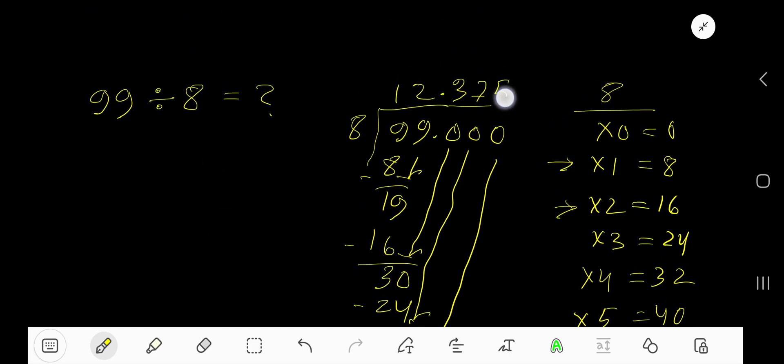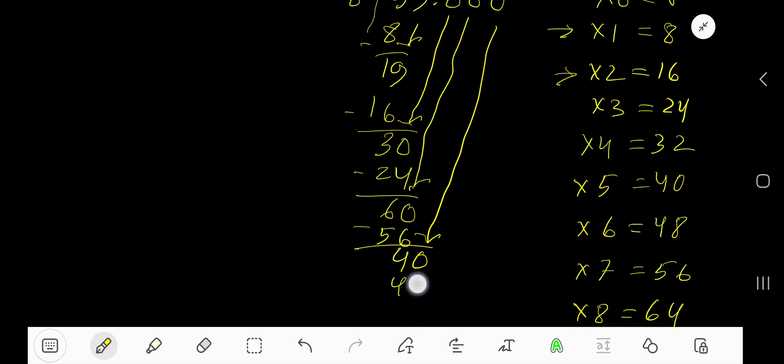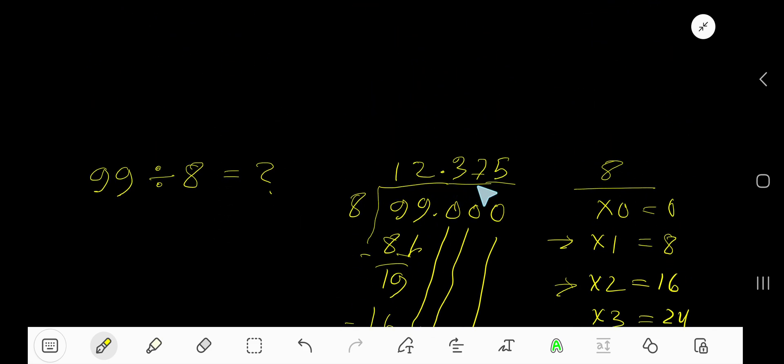Write 5. 5 times 8 is 40. Subtract, you get 0. So your answer is 12.375. Bye!